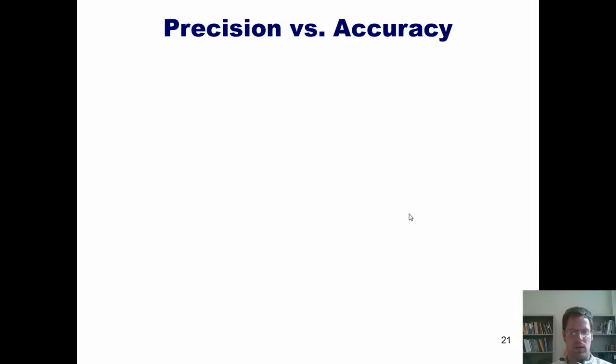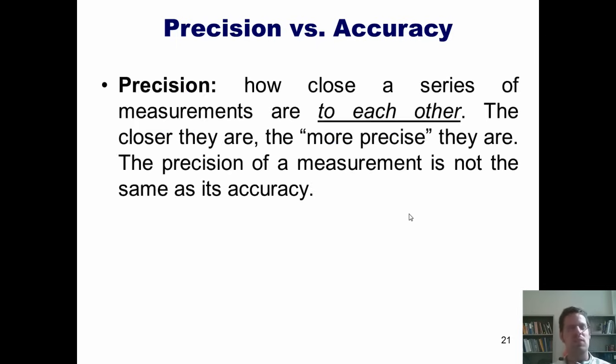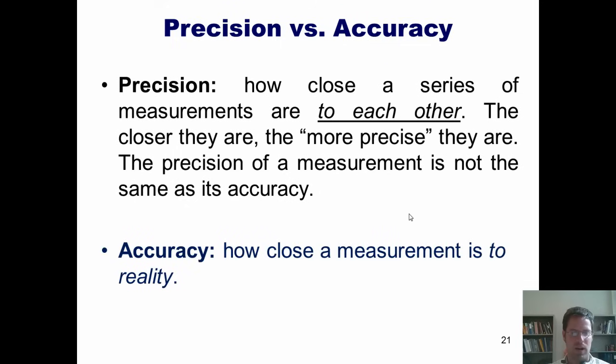We now turn to a different subject, which is once again another description of vocabulary. What is the difference between precision and accuracy? For a layperson, absolutely nothing. But for a scientist, these two terms are not the same thing. Strictly speaking, precision is how close a series of different measurements are to each other. The closer they are, the more precise they are. The precision of a measurement is not the same as its accuracy. Accuracy, in contrast, is how close a measurement is to reality.